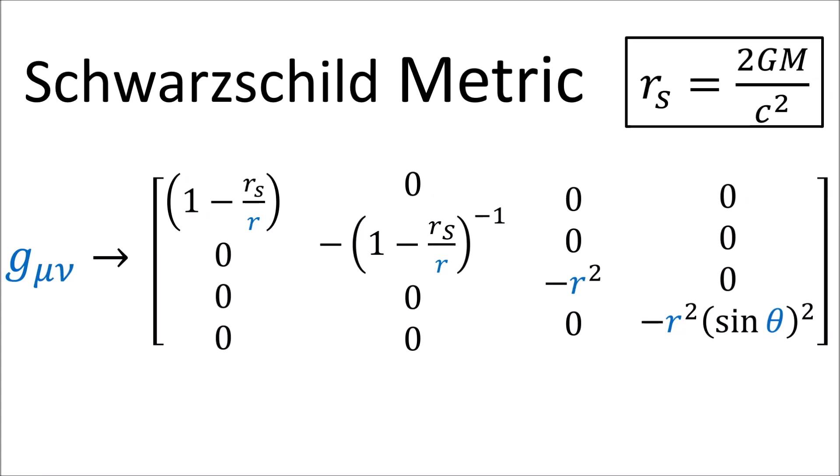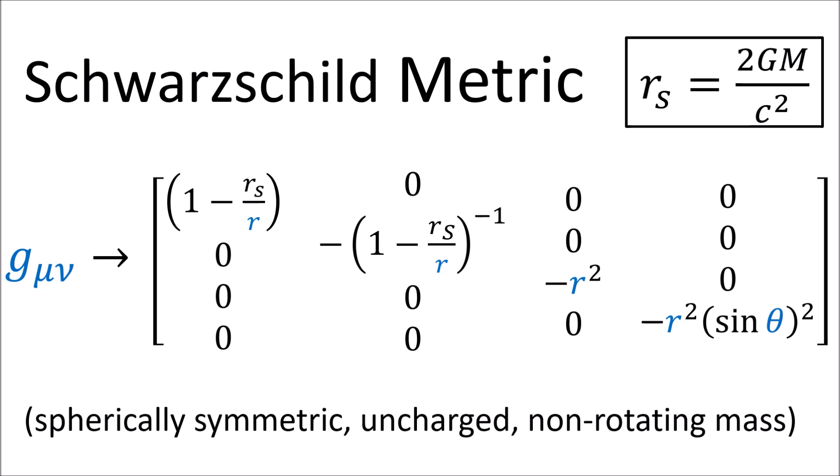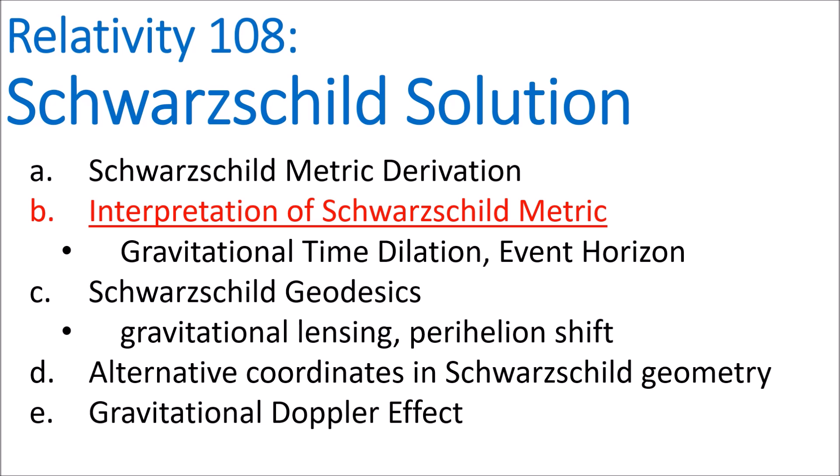In the last video, we derived the Schwarzschild metric for the curved spacetime around an uncharged non-rotating spherical mass. In this video, we're going to interpret what this metric means.